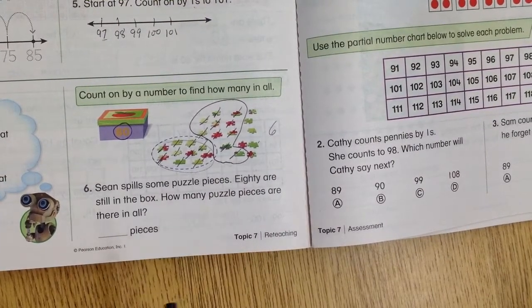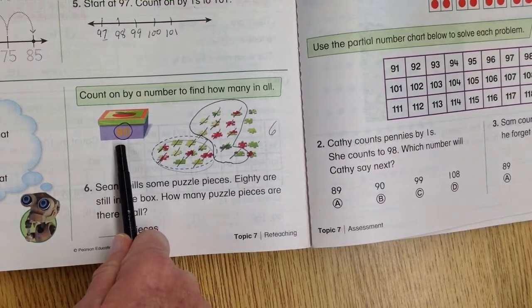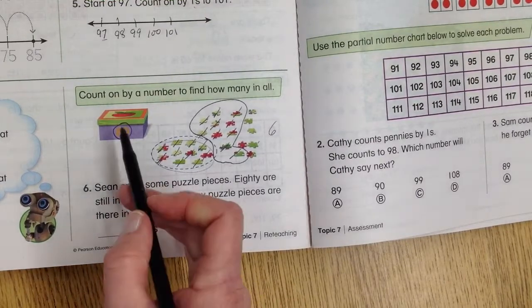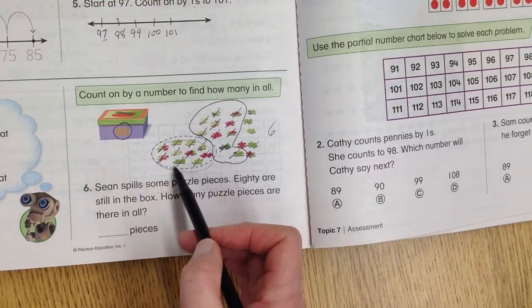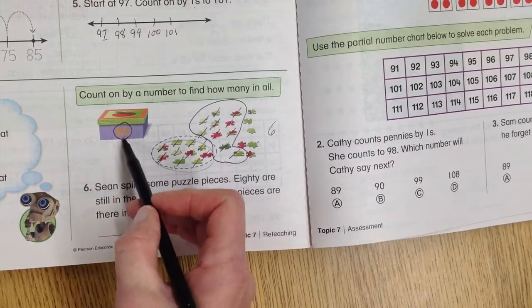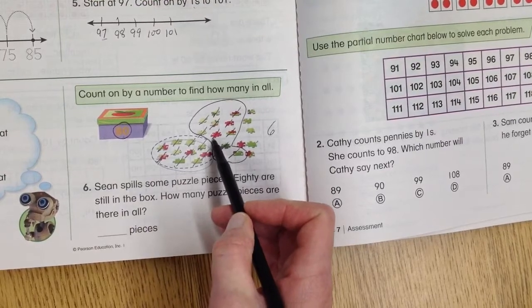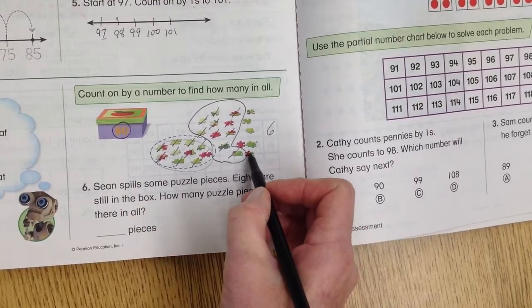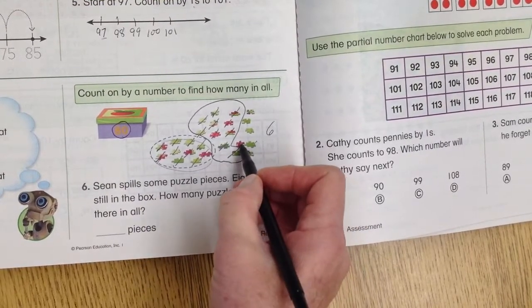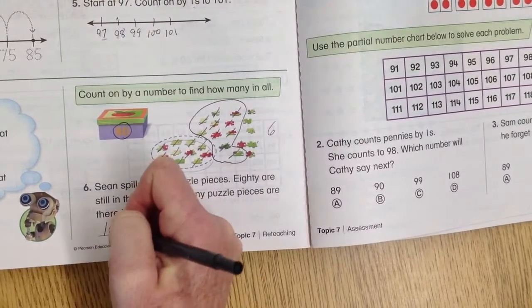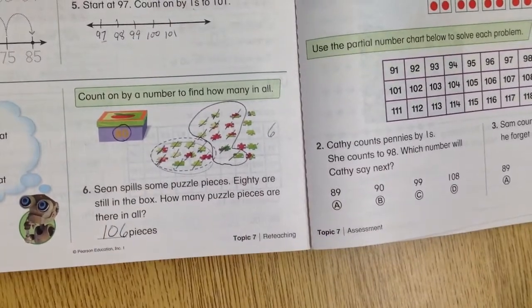Sean spills some puzzle pieces. 80 are in the box. How many puzzle pieces are there in all? So we're going to start at 80 and count on by tens: 80, 90, 100, and then we have to count in the 6 extras: 101, 102, 103, 104, 105, 106.